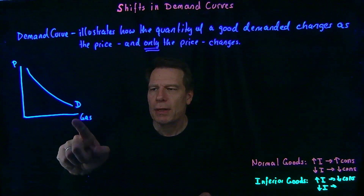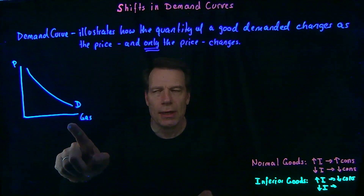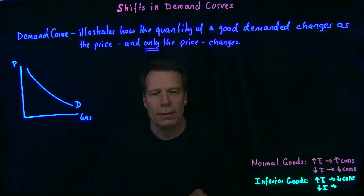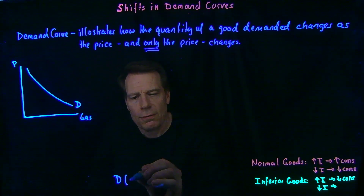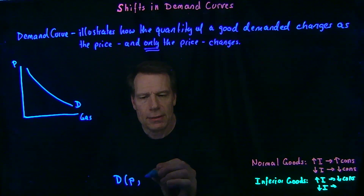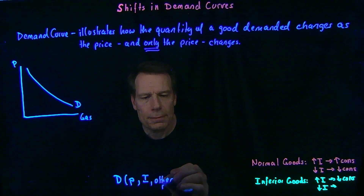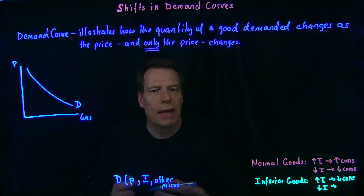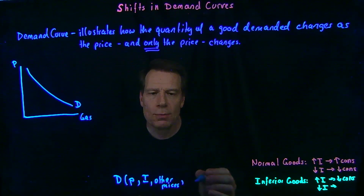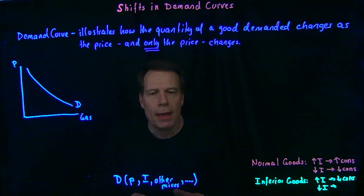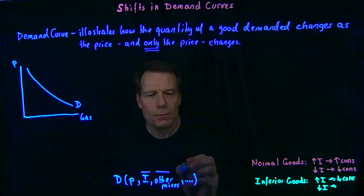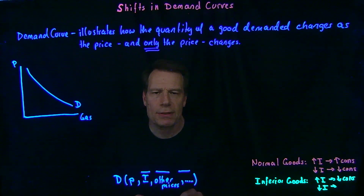The demand curve tells us how much the quantity demanded of the good on the horizontal axis changes as the price of that good, and only the price of that good, changes. But how much we demand of a good doesn't typically just depend on that good's price — it can depend on lots of other things like income or other prices in the economy, tastes, or knowledge of other goods. So along the demand curve, we hold everything else fixed.